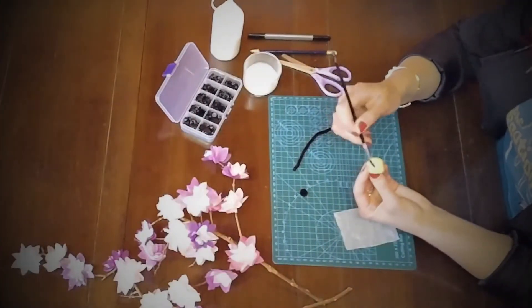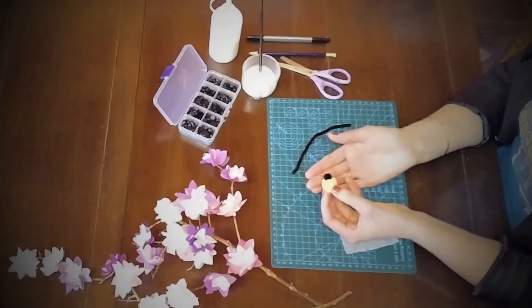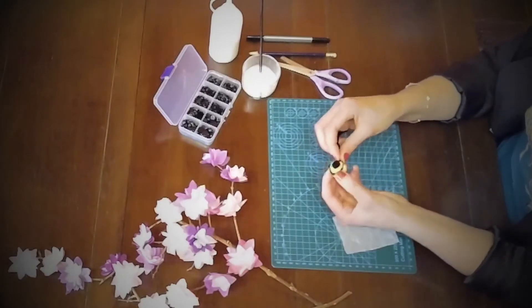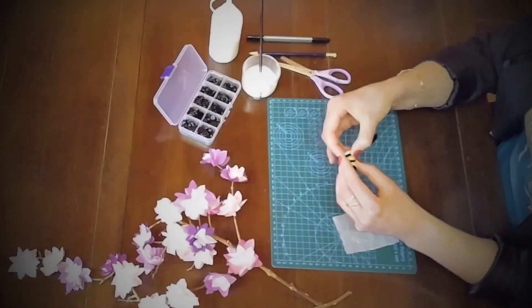Glue a small black pom-pom onto a medium yellow one. Once dry wrap your black pipe cleaner around the yellow pom-pom twice and cut.